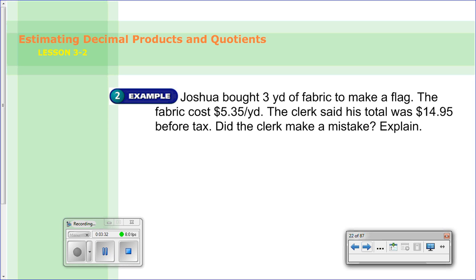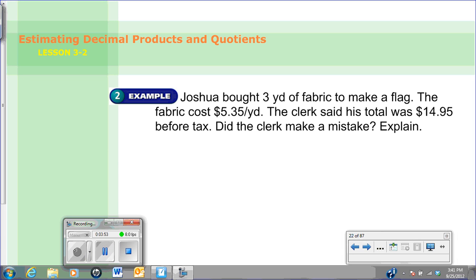Again, you're rounding here. So estimate the total. We know he bought 3 yards of fabric, and each yard costs $5.35. So figure out what you'd round that $5.35 to, and then go from there. Was the clerk making a mistake when he said the total was $14.95? Go ahead and work that out now. And when you're all done, let's see.